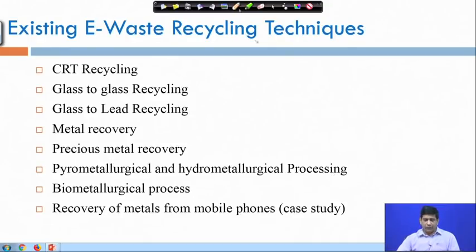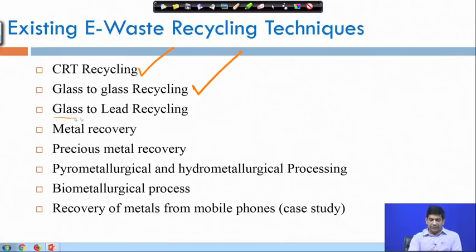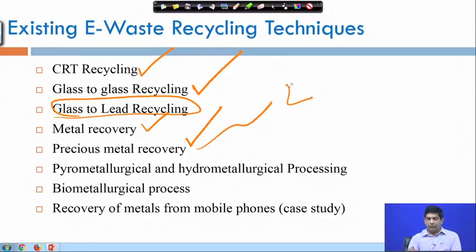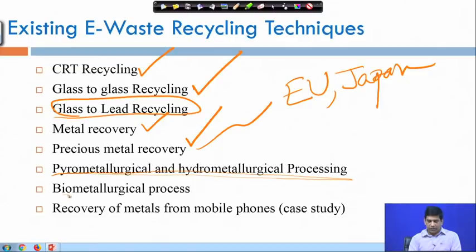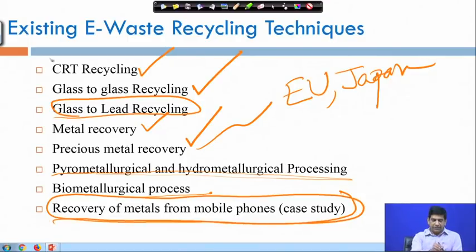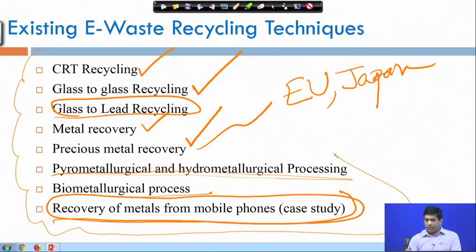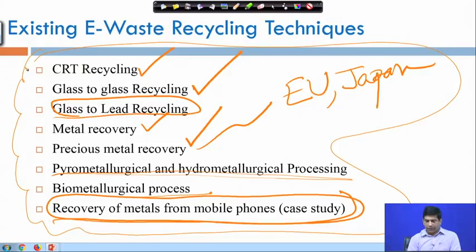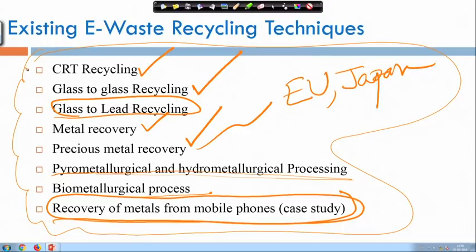Existing e-waste recycling techniques include CRT recycling — cathode ray tube recycling — with glass-to-glass recycling and glass-to-lead recycling where lead is also recovered from the glass. Precious metal recovery is happening mostly in the European Union and Japan, which are leading in that area. Pyrometallurgical and hydrometallurgical processing is going on, as is biometallurgical processing and recovery of metals from mobile phones. The Government of India's DST recently had a call specifically on recovering precious metals from electronic waste.